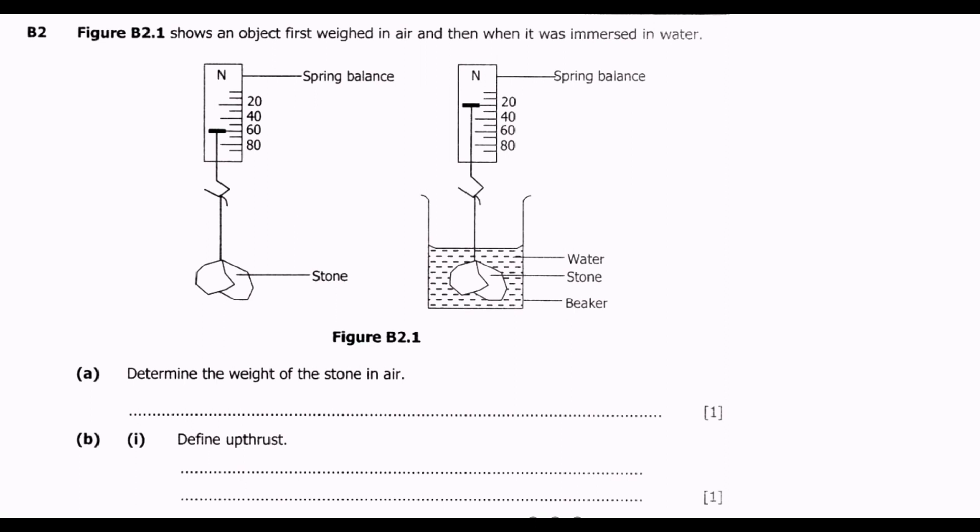Figure B2.1 shows an object first weighed in air and then when it was immersed in water. Question A: determine the weight of the stone in air. This carries one mark because it is straightforward. What you need to do is just read the reading on the spring balance scale. You notice that this reading is 60 Newtons as you can see from here.